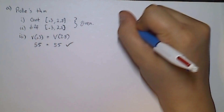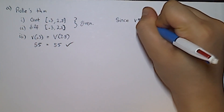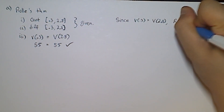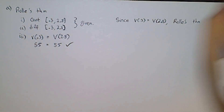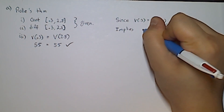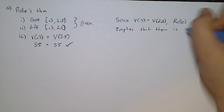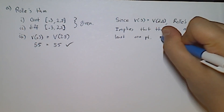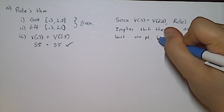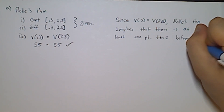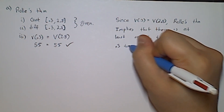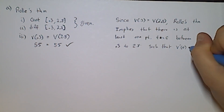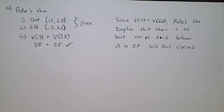Since velocity at 0.3 equals velocity at 2.8, Rolle's Theorem implies that there is at least one point t equal to c between 0.3 and 2.8 such that the derivative of velocity is equal to zero. That concludes part A.